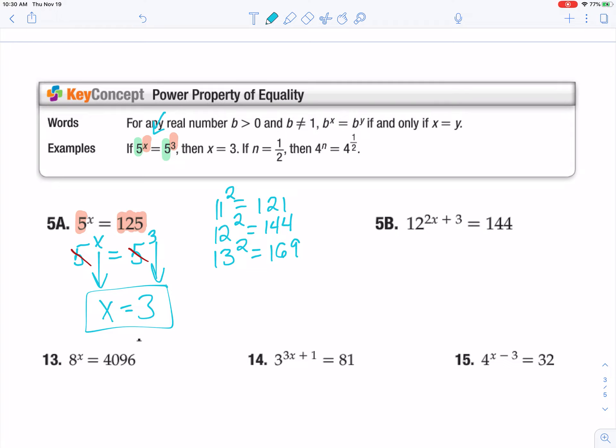All right, so what I'm going to end up with next is I look at the smaller number, and I see that it is 12. And I ask myself, how can I write 144 using base 12? And I notice that 144 is the same thing as 12 squared.